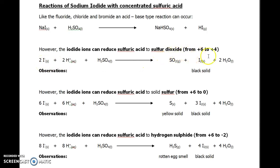We form a black solid here. But iodide is such a good reducing agent, it can actually reduce even further to elemental sulfur. That is sulfur with the oxidation number zero.